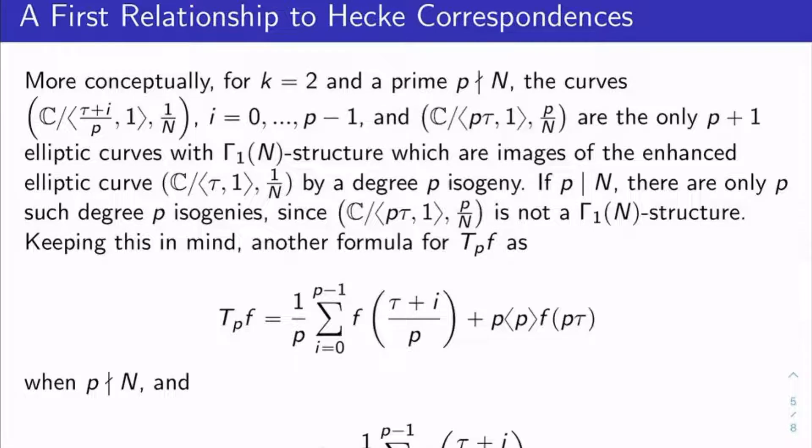So let's look at Hecke operators from a different perspective, and let's look at a first relationship to Hecke correspondences. So more conceptually, let's let k be 2 now, just for simplicity. And let's let p be a prime that doesn't divide our n. Recall that the curves given by the elliptic curve C mod the lattice generated by tau plus i over p and 1, with the n torsion data 1 over n, where i runs from 0 to p minus 1, and the curve C mod the lattice generated by p tau and 1, with n torsion data p over n.